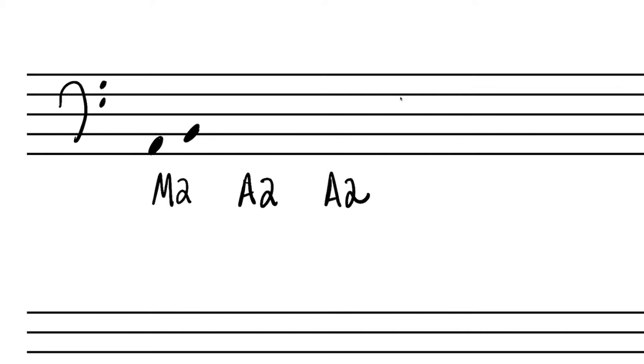Recall the major second starting on A — that's an old friend of ours, the whole step or major second, A to B. Now if we want to make that an augmented second, one way is to lower the bottom note by a half step to make it slightly larger. So instead of A to B, we could have A-flat to B-natural. That would be an augmented second — it's still a second because we count one, two, yet it's larger than a major second.